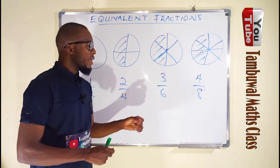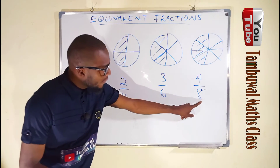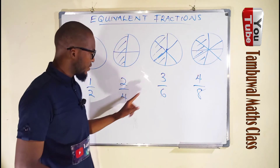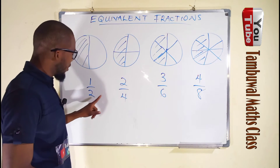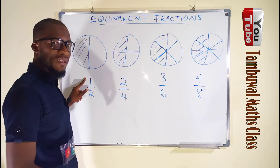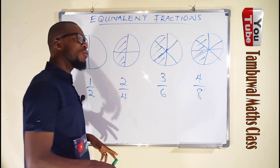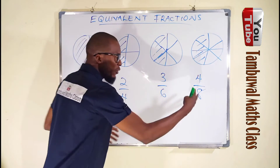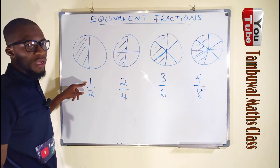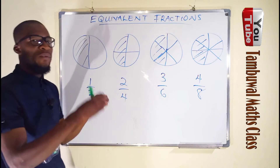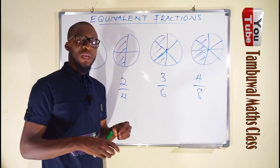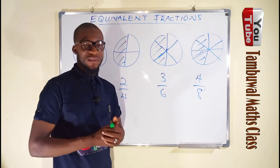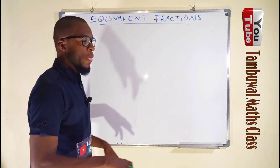If you divide two over four by two you obtain one over two. Three over six divided by two equals one over two. Four over eight divided by two is also equal to one over two. This is another way to find out whether they are equivalent or not. If you reduce them to their lowest terms you obtain one over two, and if you transform them to decimal numbers you obtain 0.5. Hence we say they are equivalent.